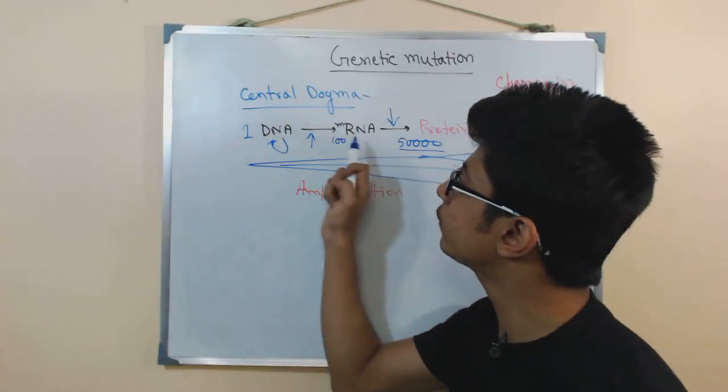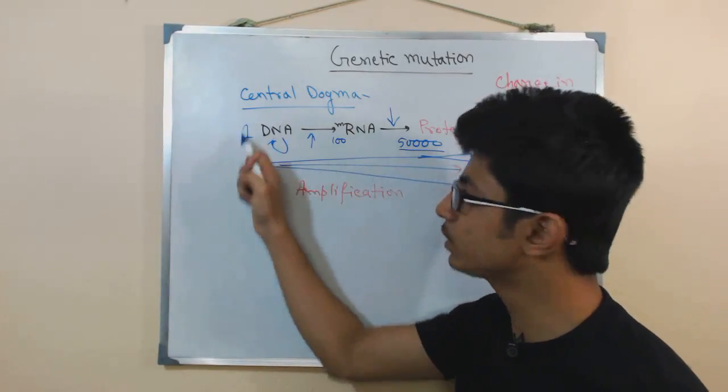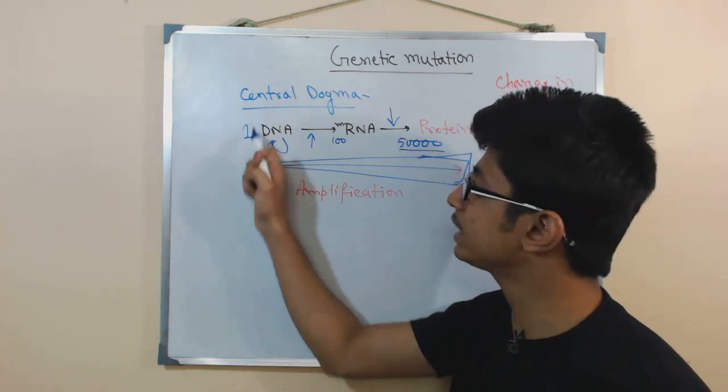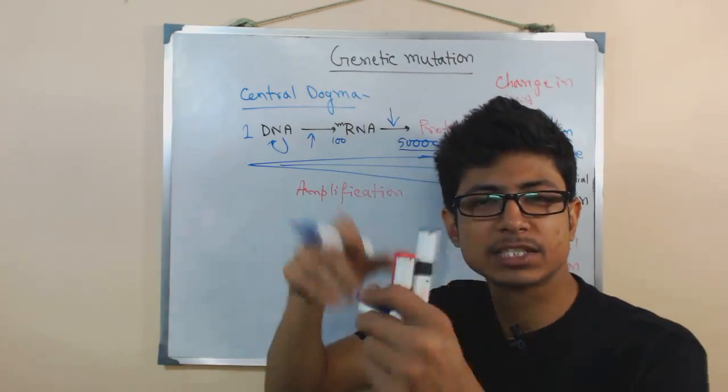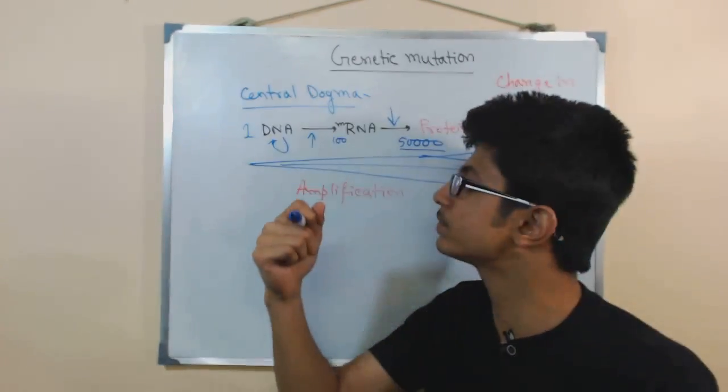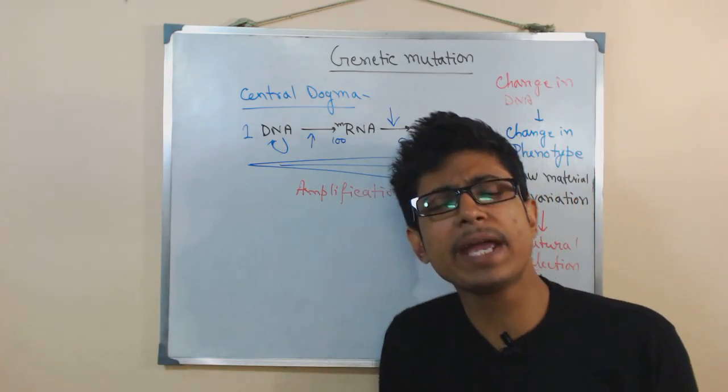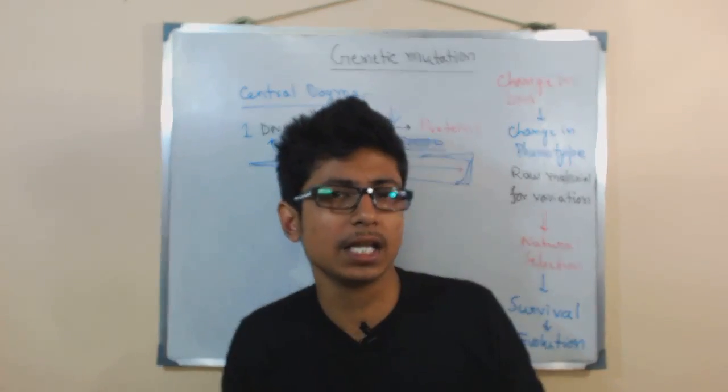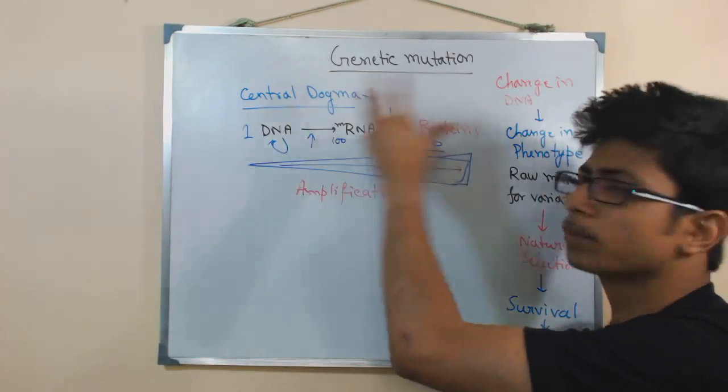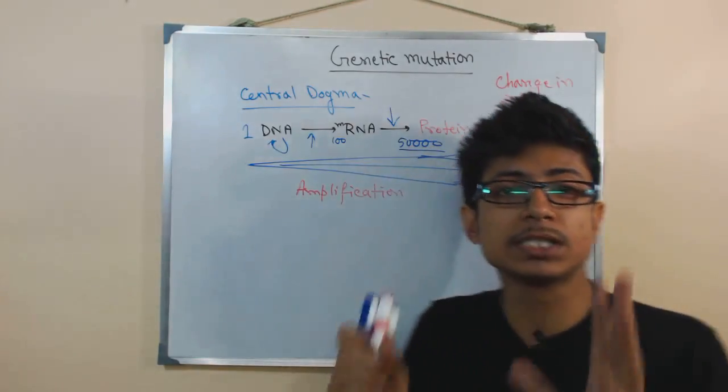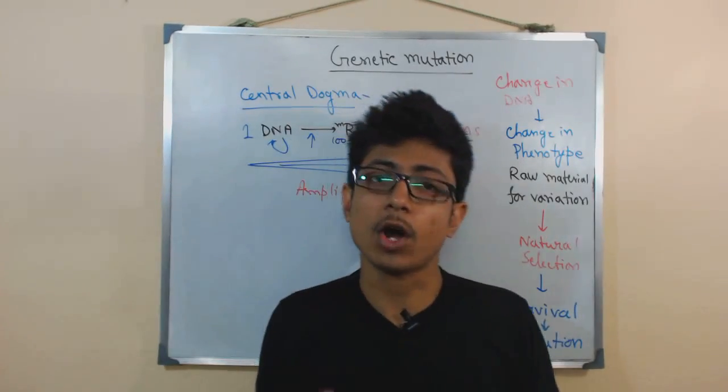And during the accessibility of the DNA for transcription - because in eukaryotic cells, DNA is not just present as DNA, it is coiled around histone proteins - during the accessibility, there can also be mutations. So there are many different stages inside the cell from the production of the DNA to the production of the protein where mutations can occur.